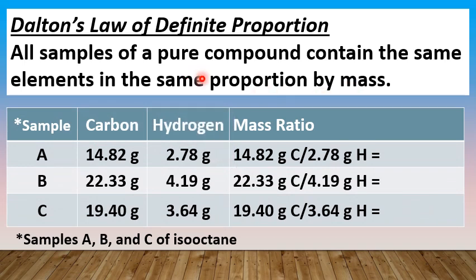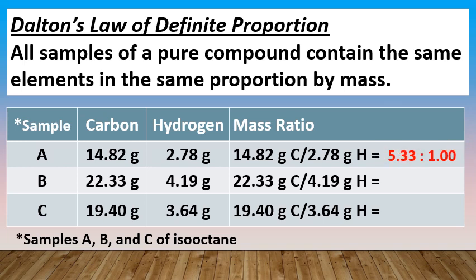As an example, when different samples A, B, and C of isooctane — a component of gasoline and one of the standards used in the octane rating system — are analyzed in terms of mass of carbon and hydrogen, they are bound to have a carbon to hydrogen mass ratio of 5.33 to 1, as shown for all three samples in this table.